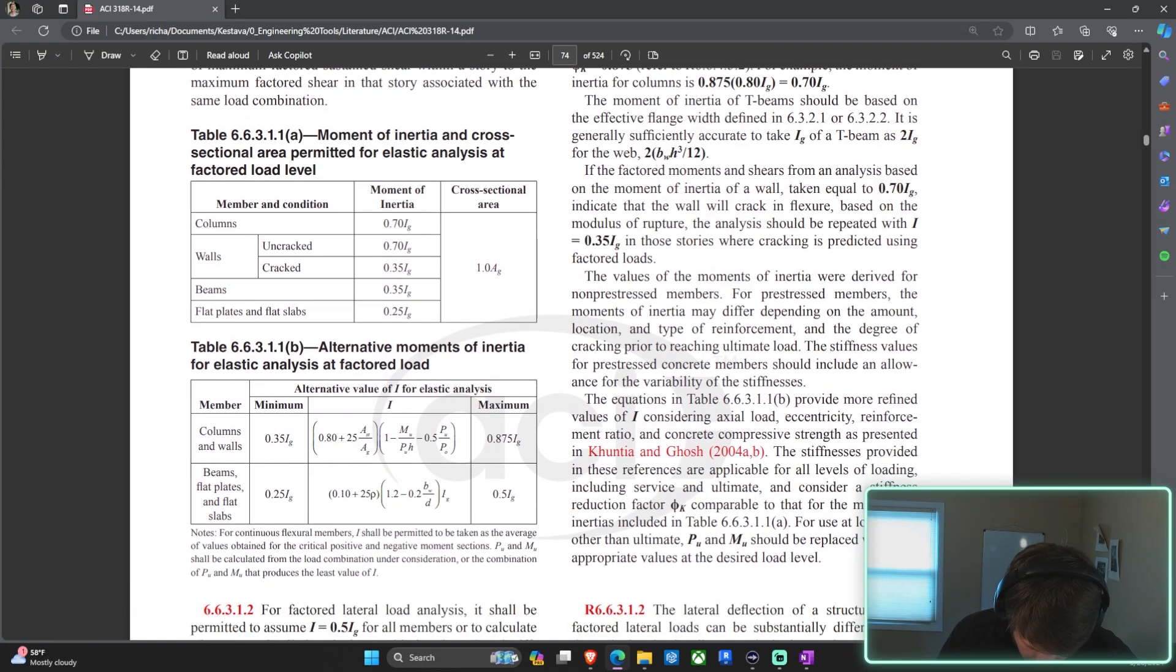In chapter six, you do have your beautiful table, very clear, moment of inertia for cross-sectional areas permitted for elastic analysis at factor load level design. And you have all of your different conditions. Based on the element you're analyzing, for us today, we're doing walls, and they give two criteria. They say if you were designing your wall so that it doesn't crack, or if you're designing your wall so that it intentionally cracks under an extreme loading event, they tell you to run your analysis with a moment of inertia of these two.